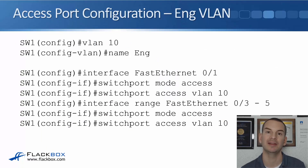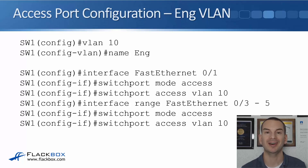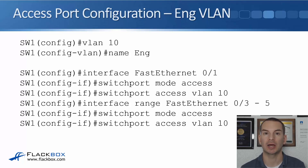Looking at the configuration, we'll do the engineering VLAN first. We have to create the VLAN — the command is simply 'vlan' followed by the number you want to use, entered in global config. So we say 'vlan 10', which gets us into the VLAN sub-configuration mode. Optionally, you can give it a name — it's a good idea to use a logical name, so here we've called it 'eng'.